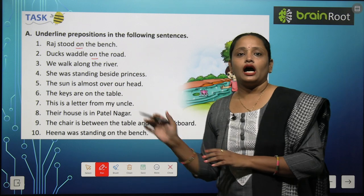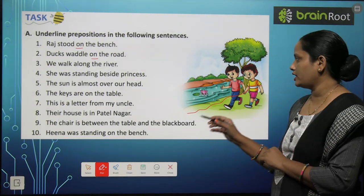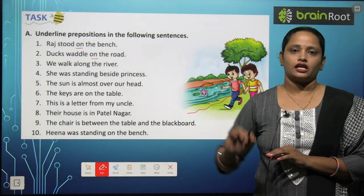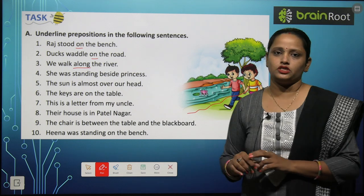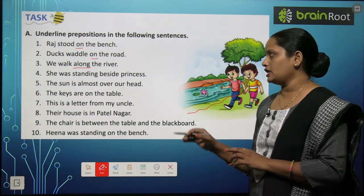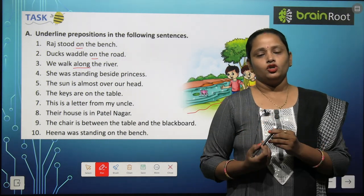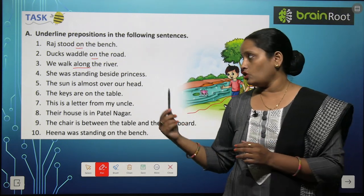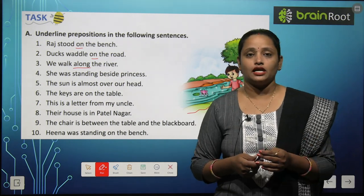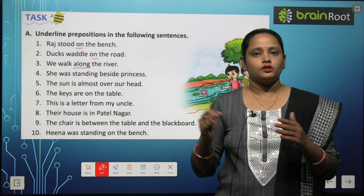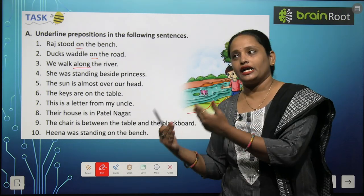We walk along the river — 'along' means river ke kinaare. Hum chal rahe hain, river jahan jahan ja rahi hai uske kinaare kinaare hum ja rahe hain. Toh 'along' means kinaare, so 'along' is the preposition. She was standing beside the princess — 'beside' means kisi cheez ke side mein, jaise aapka jo partner school mein baithta hai, aapke just side mein baithta hai. Toh 'beside' is the preposition here.